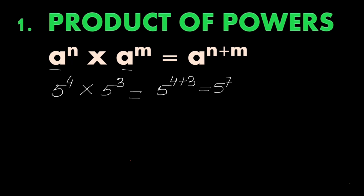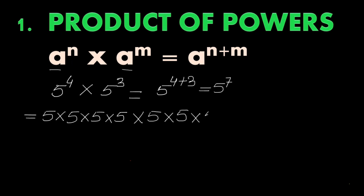But why? Let us verify. 5 raised to the power 4 means 5 multiplied 4 times, and 5 cubed means 5 multiplied 3 times. Overall, 5 is multiplied 7 times, so we express that as 5 raised to the power 7. We are getting the same value. This is the easy method: when both bases are the same and exponents are different, we just add the exponents to get the product.